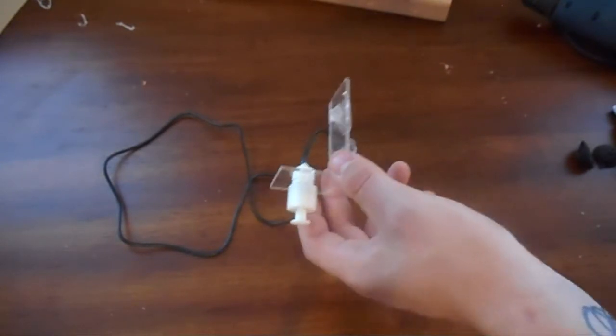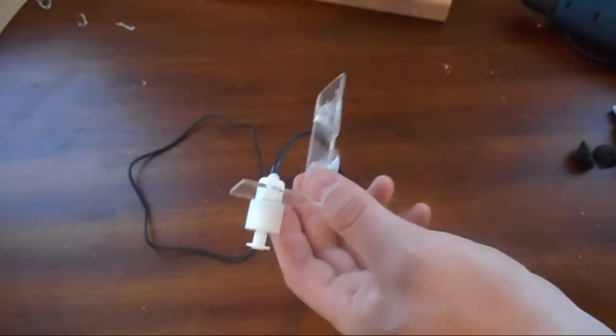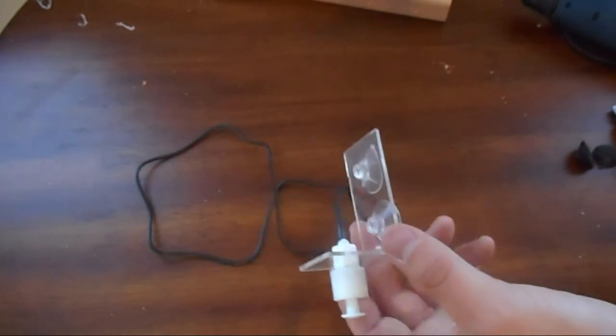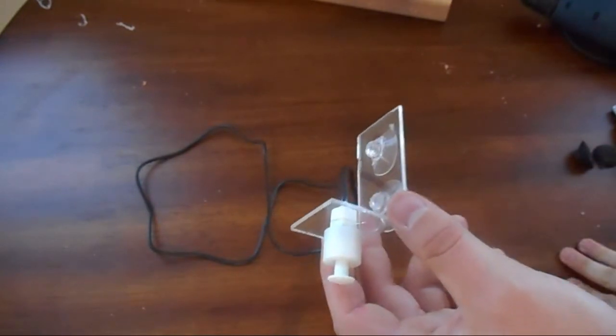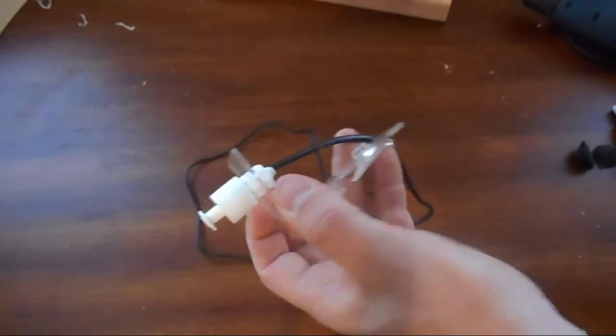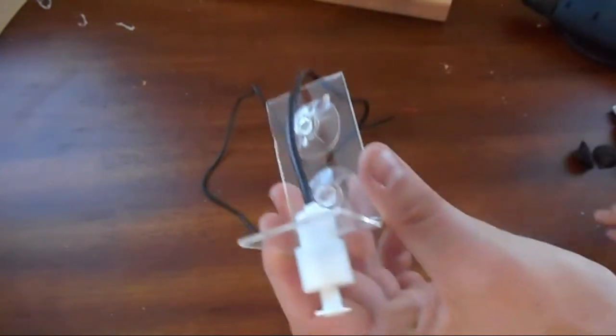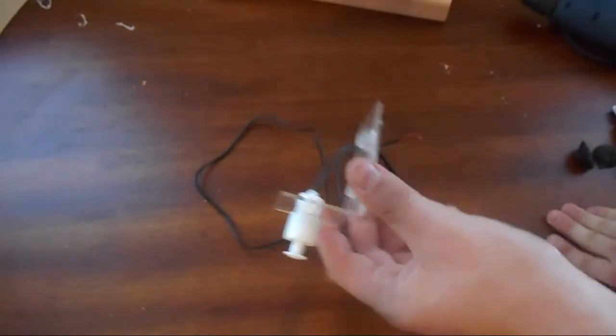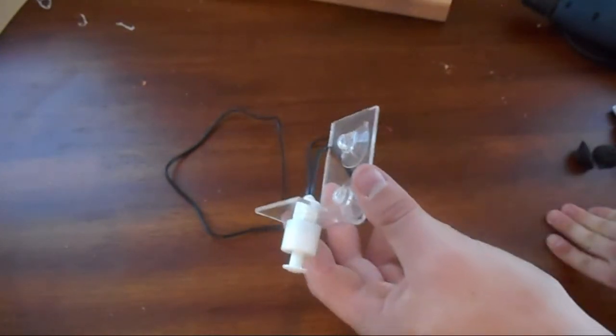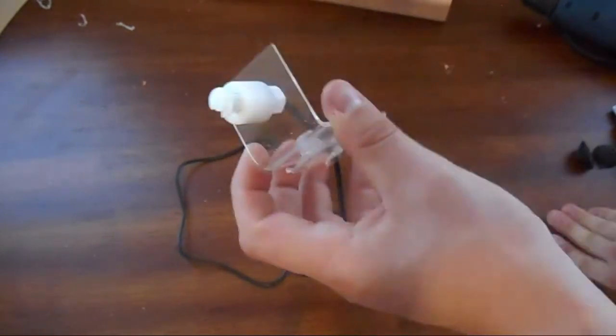So what we're going to do in our next video is install this in the refugium. It's going to be the backup to basically turn off the auto top off if the level ever was to get too high. And we are going to install it in our breakout box that we built in the previous video and then program it in the Apex and also set up the alarms and all that good stuff for it as well.